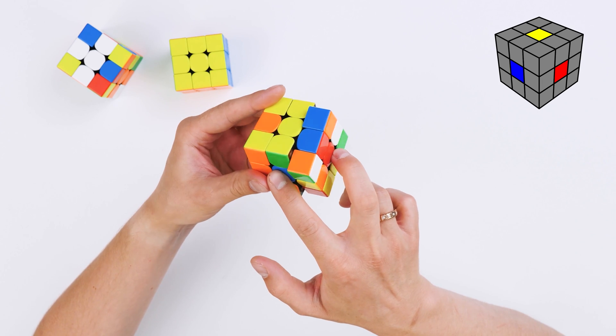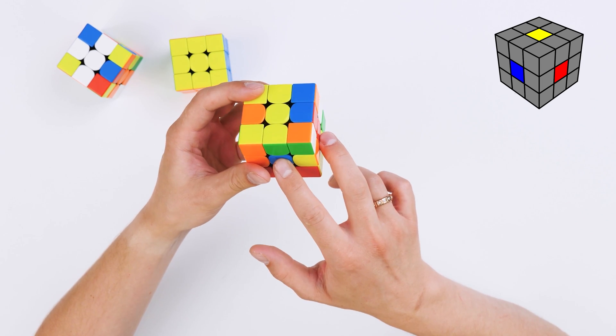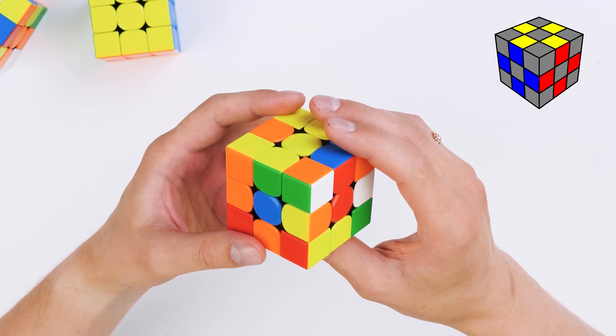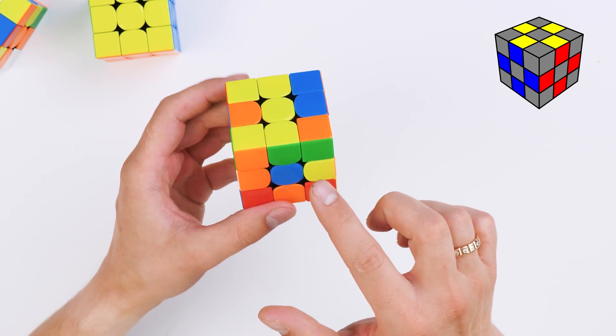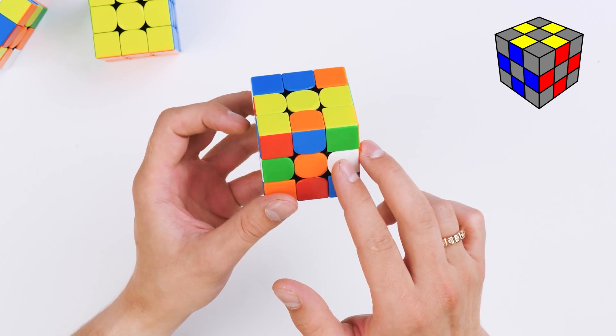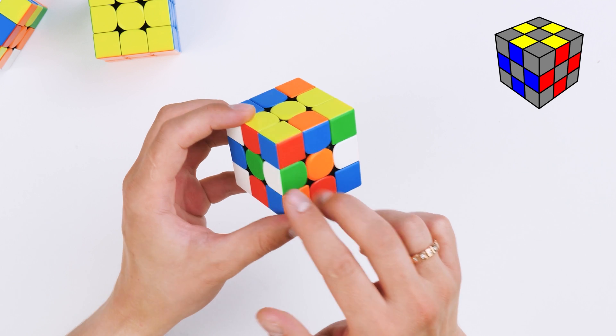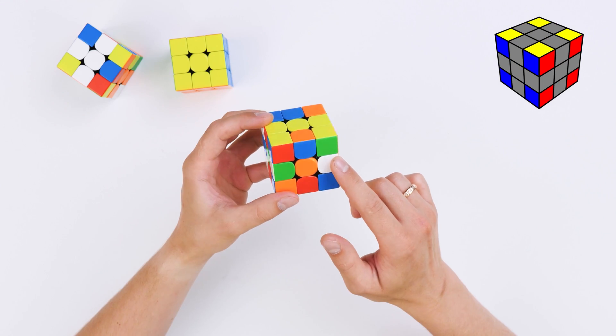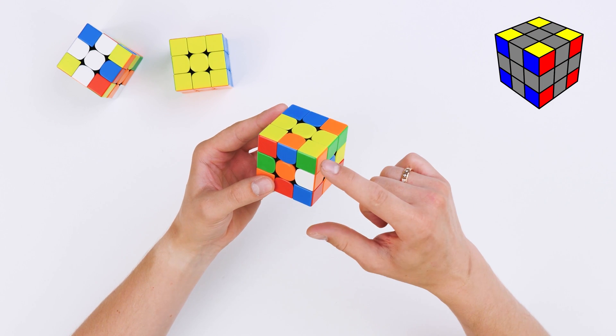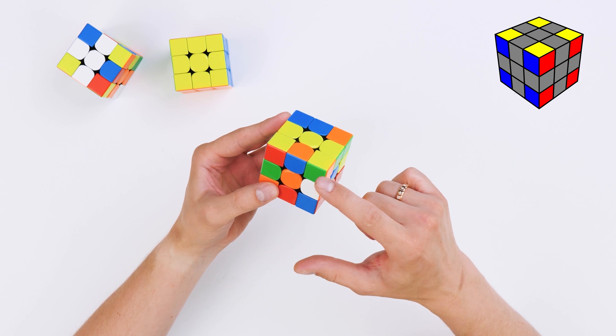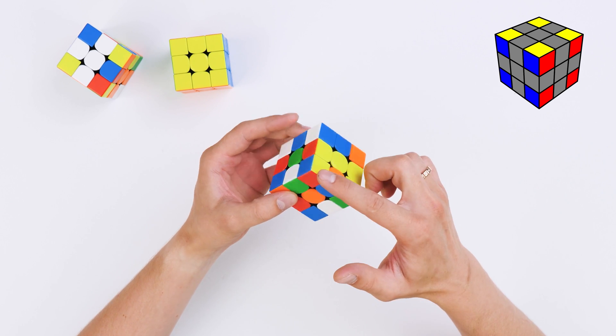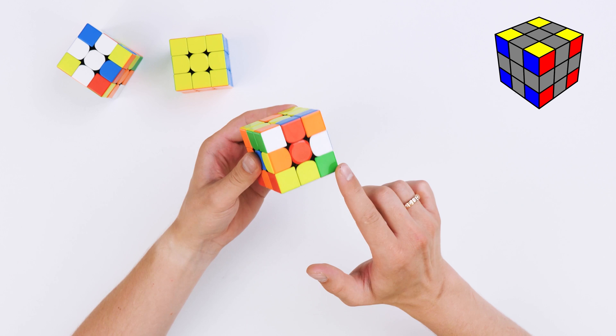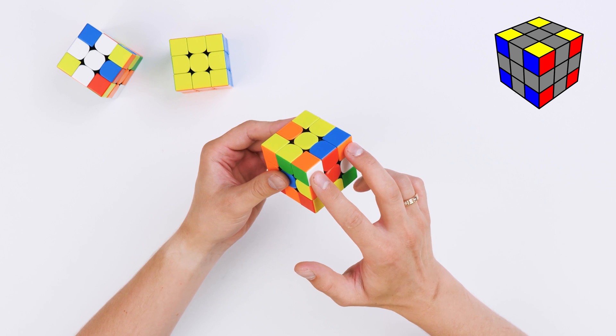There are also 12 edges, they have two colors on each part, and here they are. There are also eight corners, each has three colors. By their name it's easy to understand that they are on the corners of the cube, and there are eight of them.